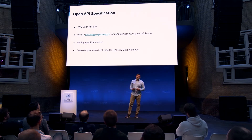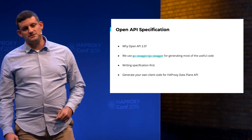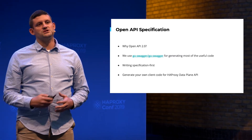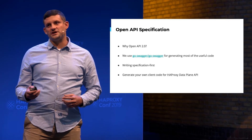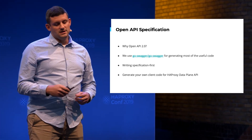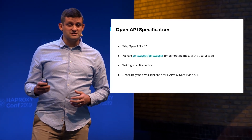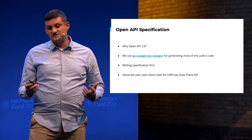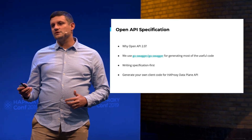Our workflow while implementing it was specification-first: when we add a new feature or make a change, we first update everything in the specification, then use the specification to generate the code, and finally implement the logic for that feature. One of the benefits of using a specification language to describe your API is that you can use a wide array of tooling to generate client code for writing your own apps that interact with the Data Plane API.